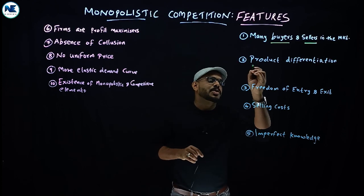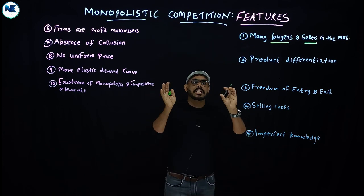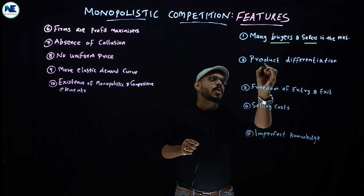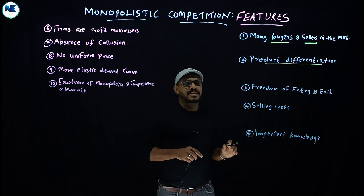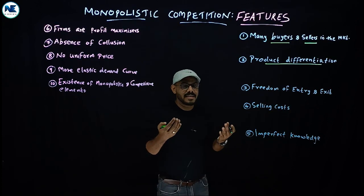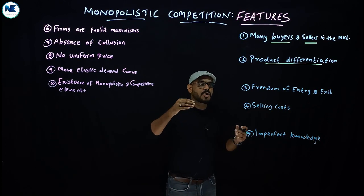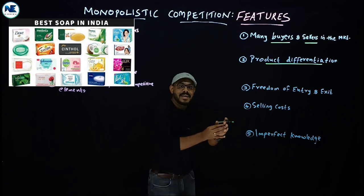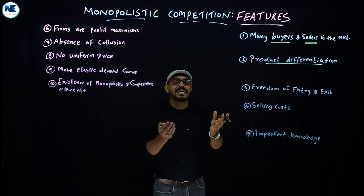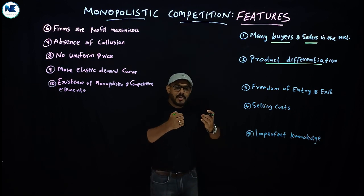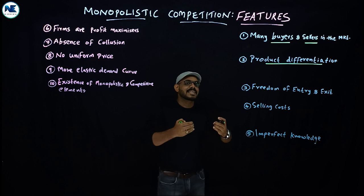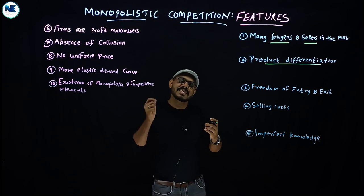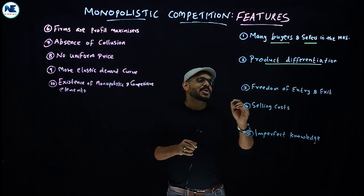The second and very important unique feature of monopolistic competition is product differentiation. Products are not identical but are close substitutes, not perfect substitutes. Each product has some uniqueness in terms of branding, design, or quality, and this differentiation is what gives sellers some degree of market power.